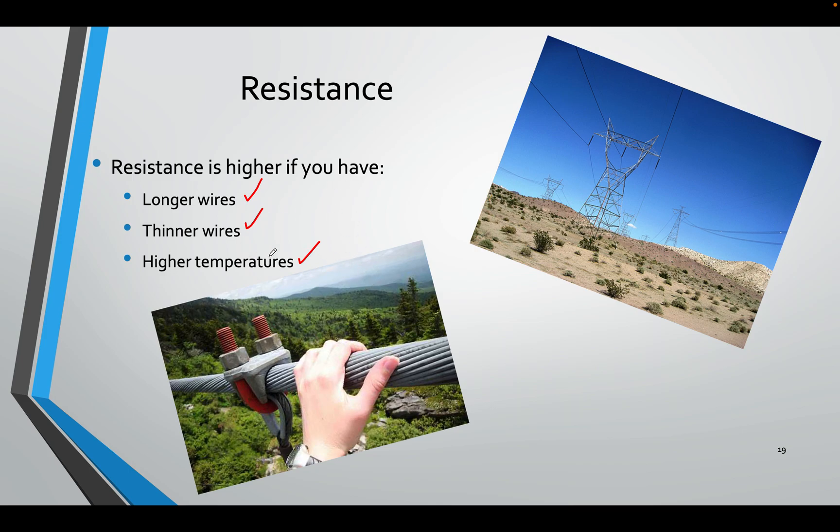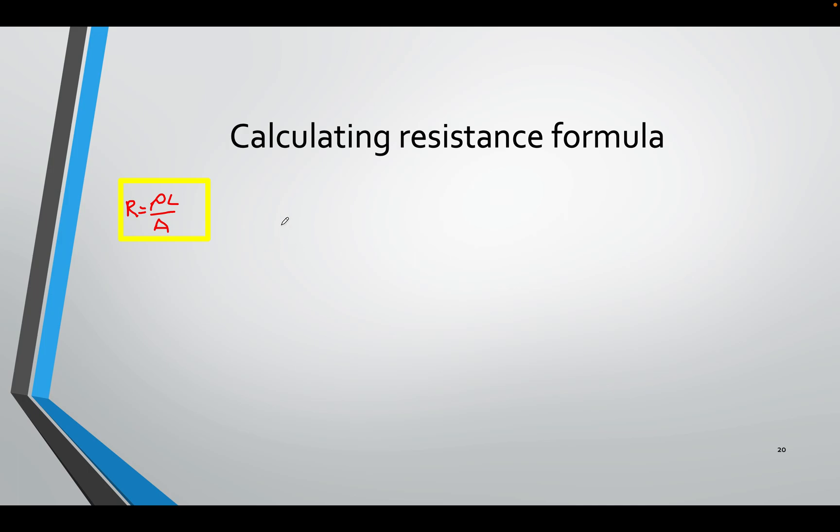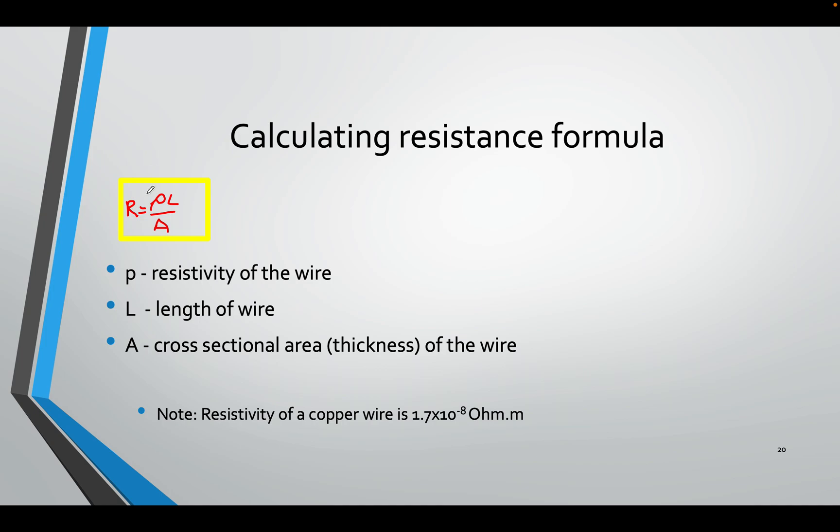And we did the formula for this. It looks something like this. R equals ρL over A. Rho, which is like a little p, is the strength, the resistivity of the wire. L is the length of the wire, and A is the area, the thickness of the wire.